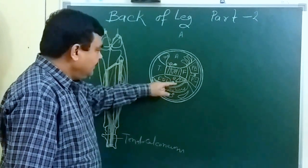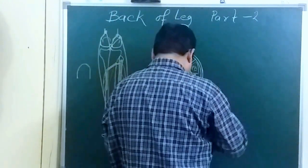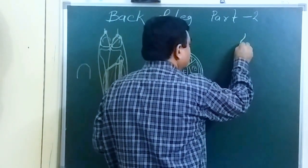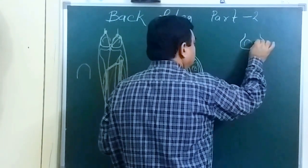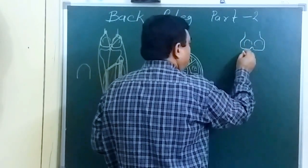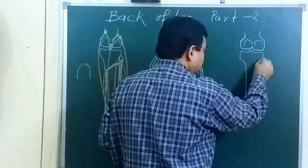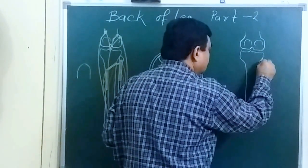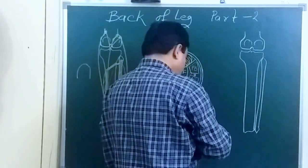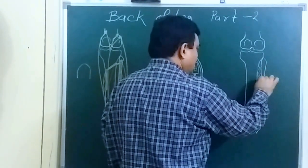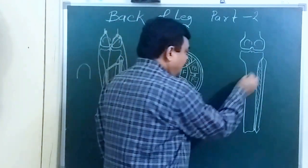After this we will discuss about the three deeper muscles of this region, and one muscle present in the upper part. We will make another diagram. Here is the condyle of the femur, here is the condyle of the tibia, this is the fibula. Here is the interosseous membrane. Here is the soleal line, and here we can see the joint capsule.